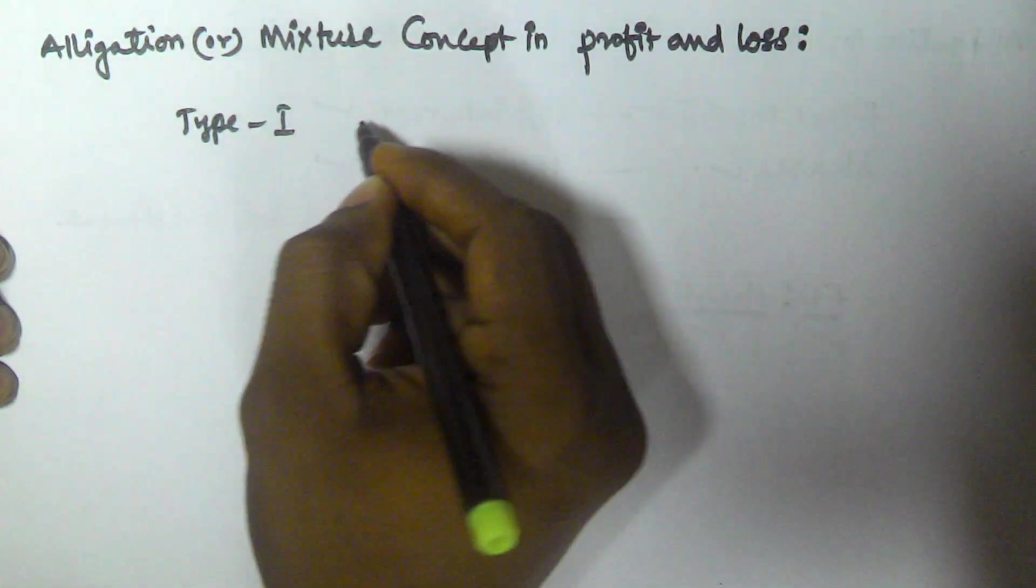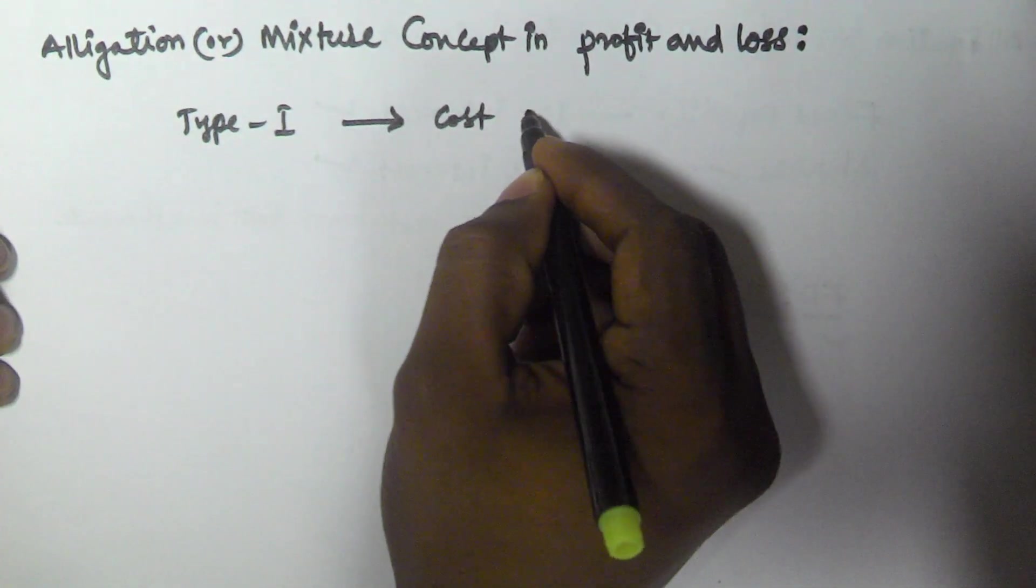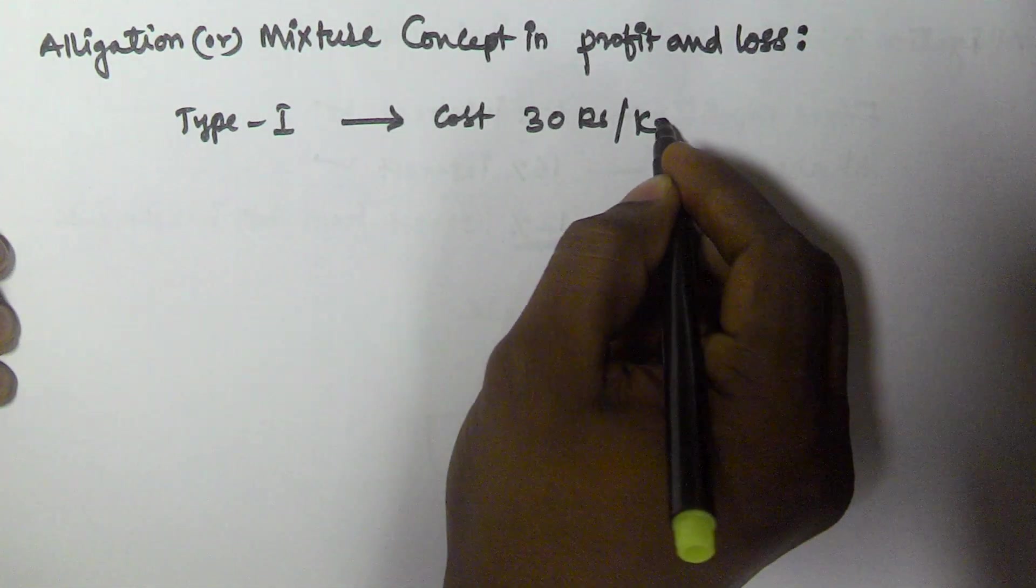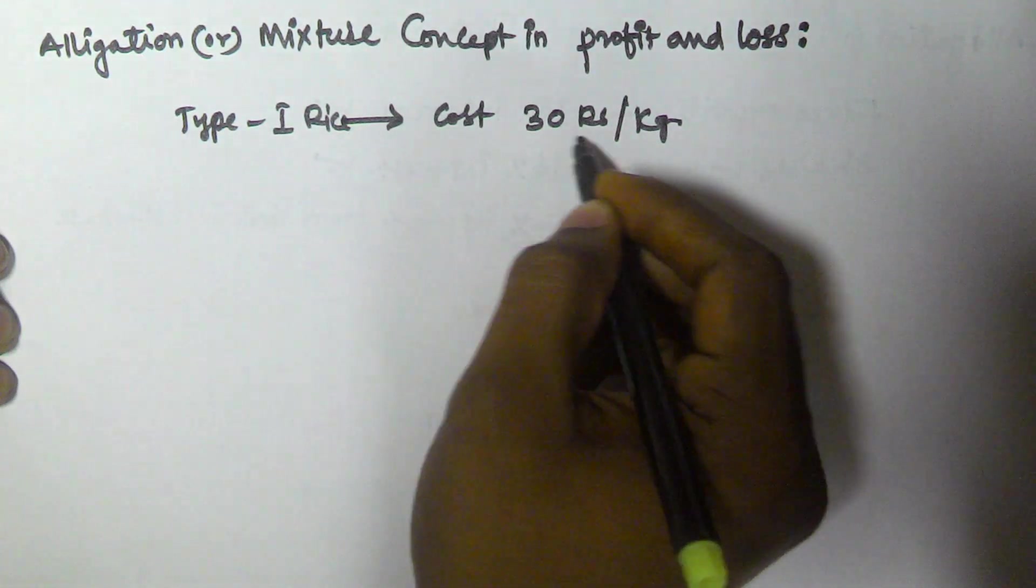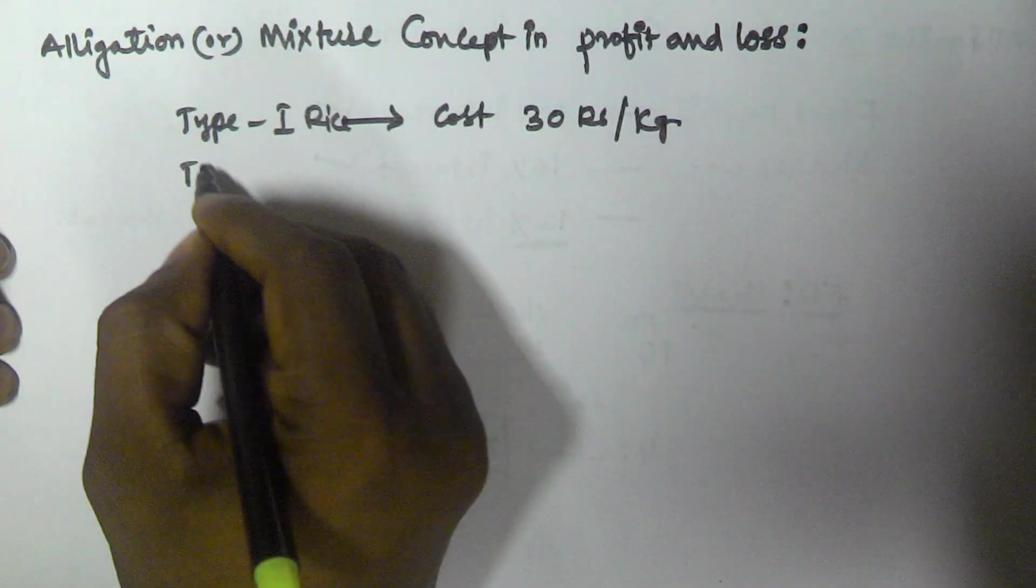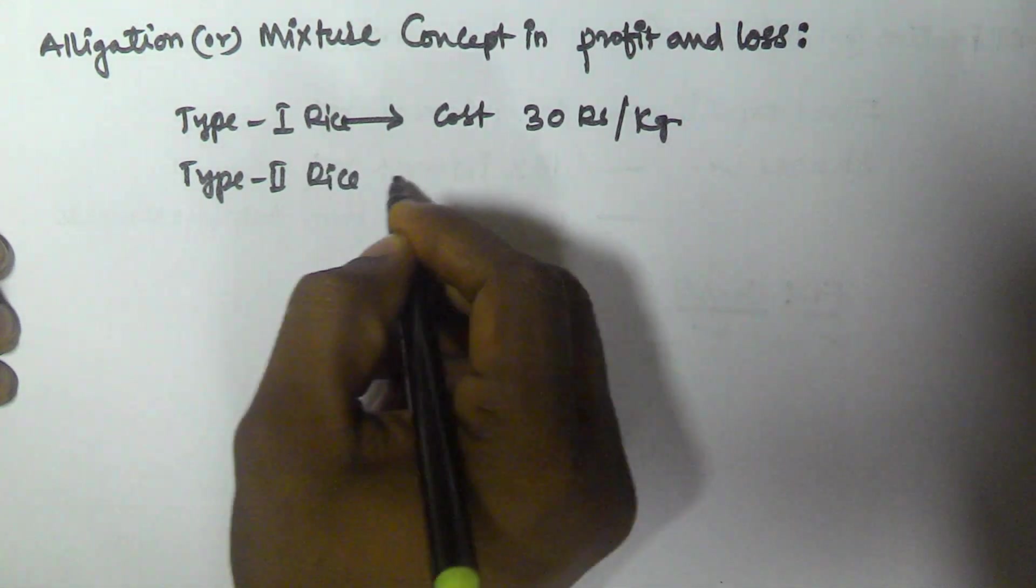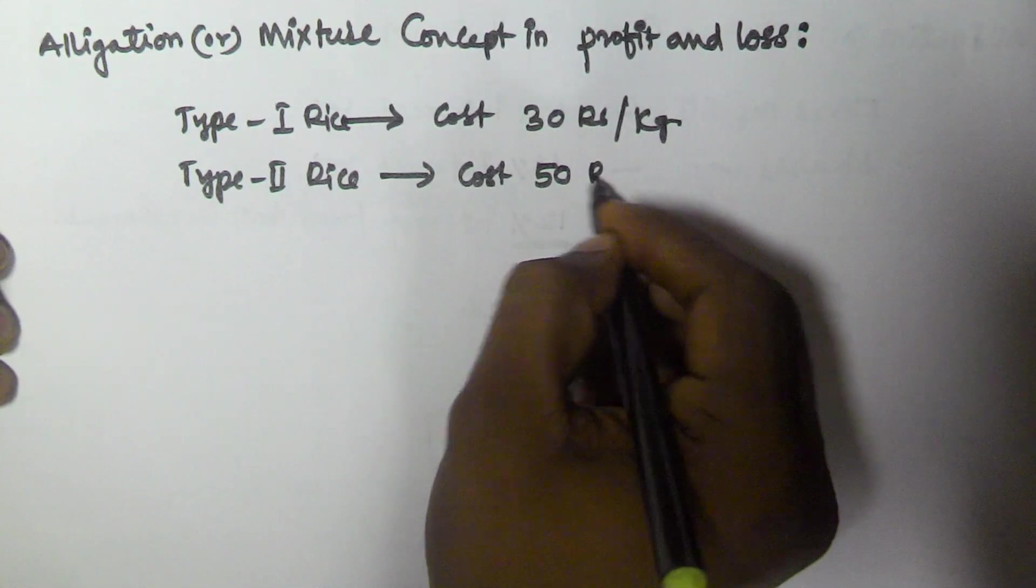Type 1 rice costs 30 rupees per kg. The same person contains Type 2 rice which costs him 50 rupees per kg.